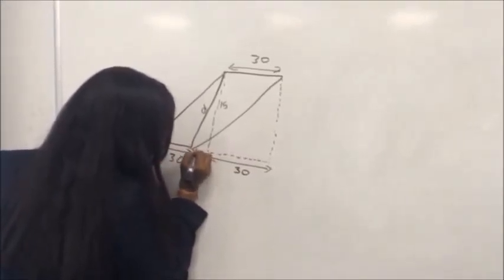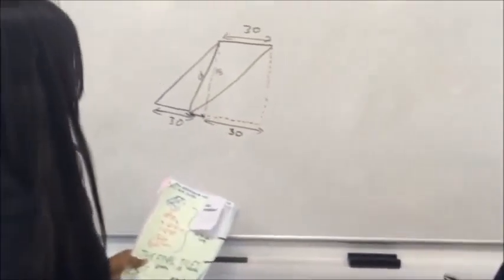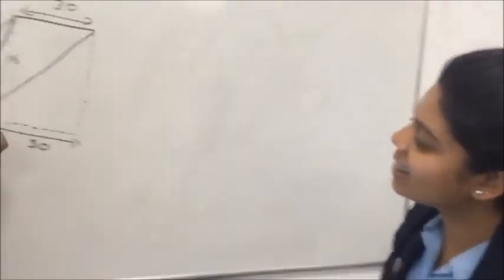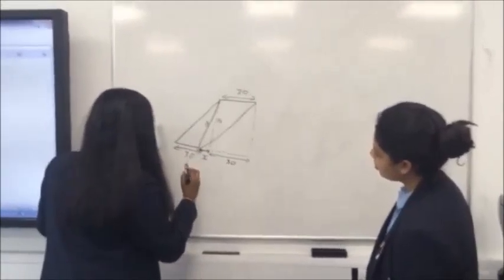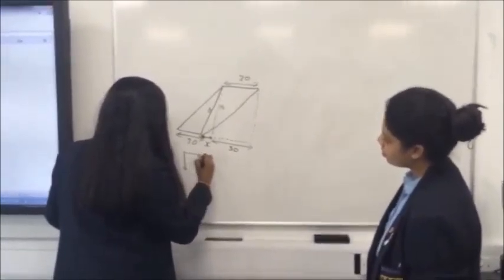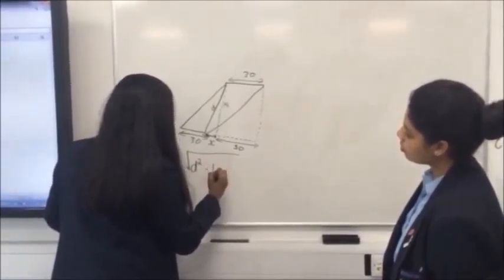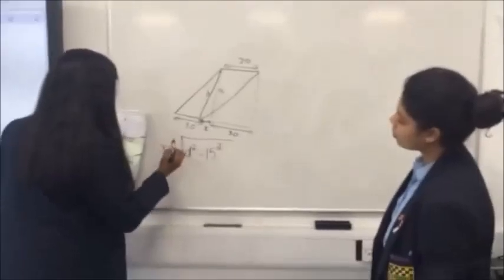And then, can you see this little bit here? Yeah. Okay. We're going to label it any number, I mean, letter possible, so. Okay. We'll put X down there. So, to find X, you have to do square root, D squared, minus 15 squared, and that is X over there.